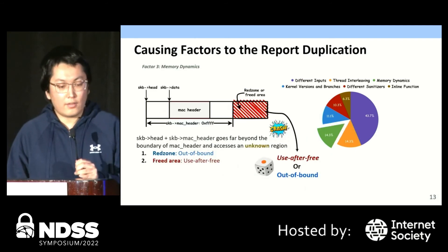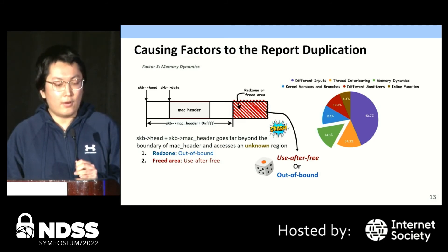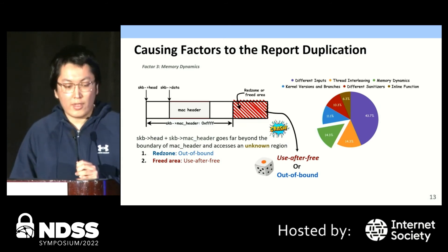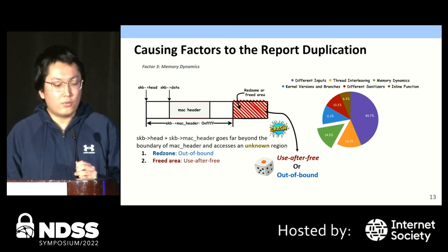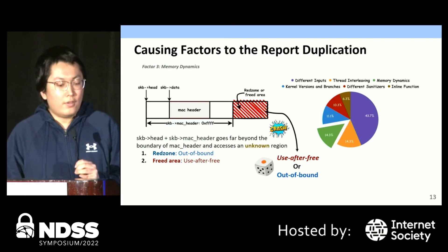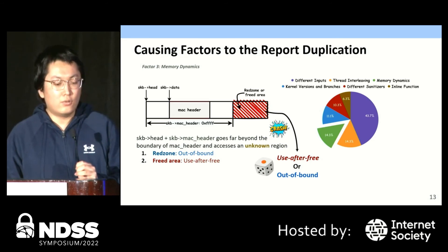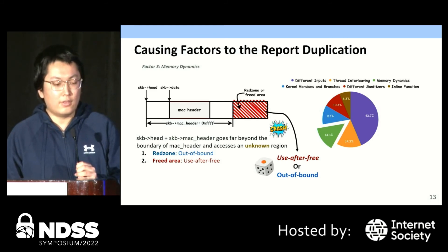The third factor is memory dynamics. The example on the slide shows the situation where a buffer index goes far beyond the boundary and accesses an unknown region. If the region is a red zone, Syzkaller produces a report with out-of-bounds as the error type. If the region is already freed, the reported error type is use-after-free. As such, the two reports are duplicated though the bug titles are different. Around 14% of situations fall into this factor.